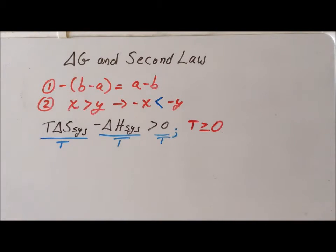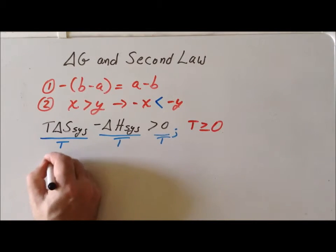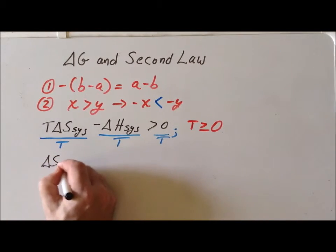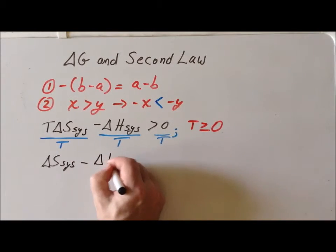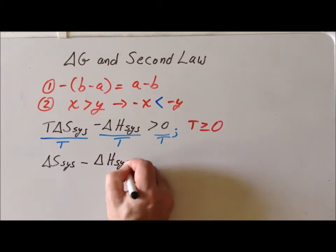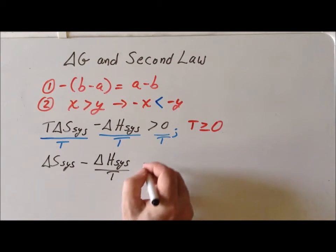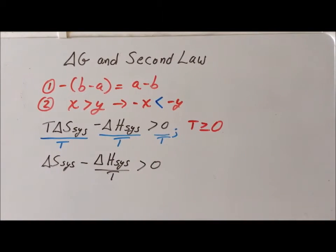So once we've divided both sides by T, this gives us the result that delta S of the system minus delta H of the system divided by T is greater than zero. Again, this is for a spontaneous process. Now it may not look like we've improved things by the manipulations that we've done so far, but we really only have one step left.